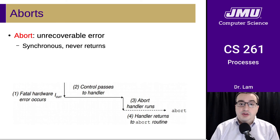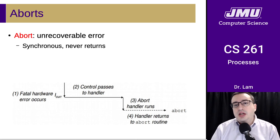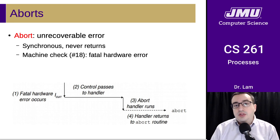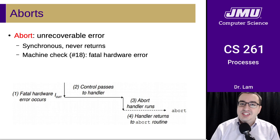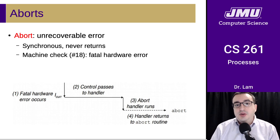The final kind of exception is an abort — an unrecoverable error. This is generally synchronous in response to something the program does, and it never returns; it's a fatal error. You likely won't encounter these this semester, as they're more common when working closer to the hardware, perhaps in embedded systems. The textbook example is interrupt number 18, referred to as a machine check — basically a fatal hardware error. Those are the types of exceptions, and in the next couple of videos we'll explore how the operating system uses these to implement processes.